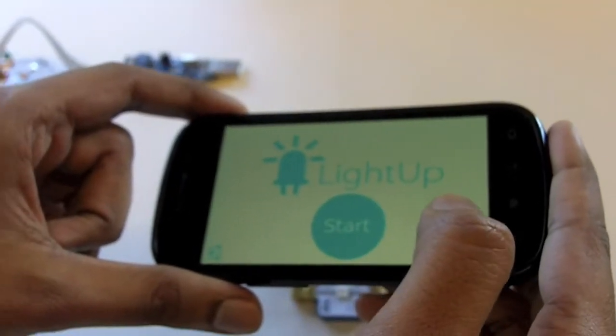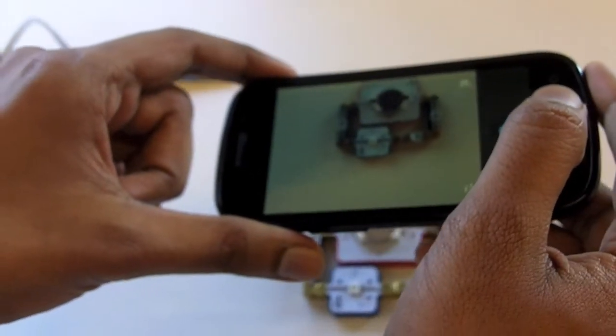But say a kid does something and it doesn't work, like in this case the LED is backwards, and they're trying to troubleshoot it. You can pull up the LightUp app and then analyze the circuit.